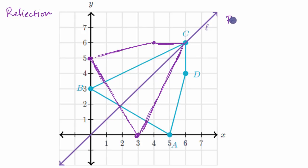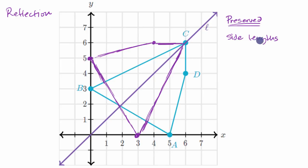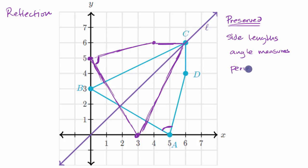What's preserved? In general, this is good to know for any rigid transformation. Side lengths — that's actually one way we define what a rigid transformation is: a transformation that preserves the lengths between corresponding points. Angle measures are also preserved. For example, angle A is going to be the same as angle A prime. The distance between A and B is going to be the same as the distance between A prime and B prime. And perimeter and area: if you have the same side lengths and the same angles, perimeter and area are also preserved — just as we saw with the rotation example.